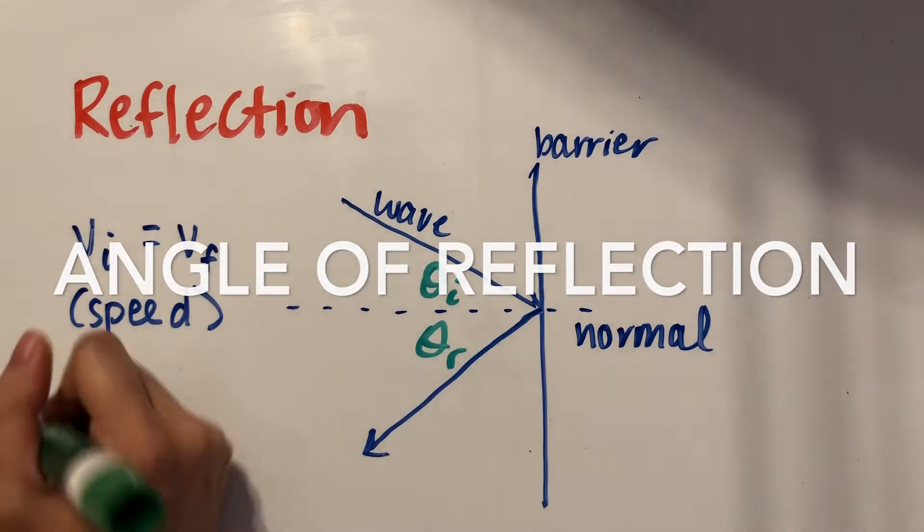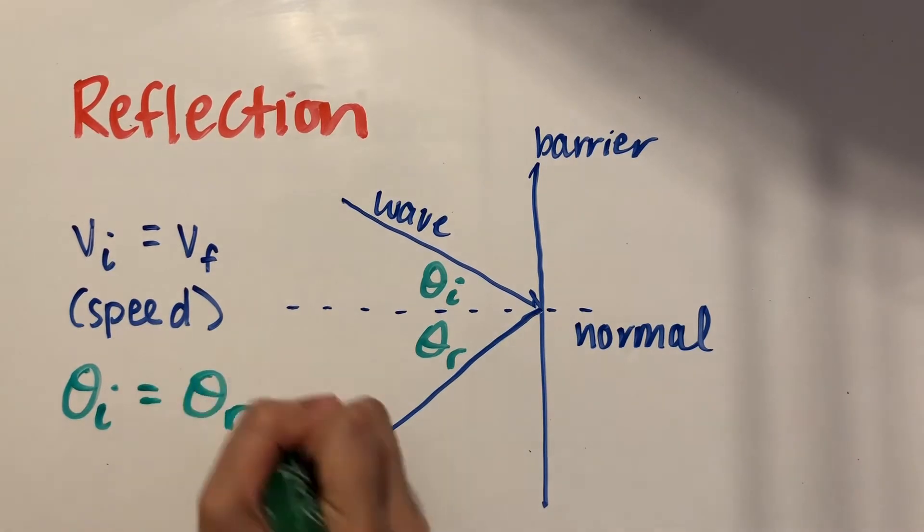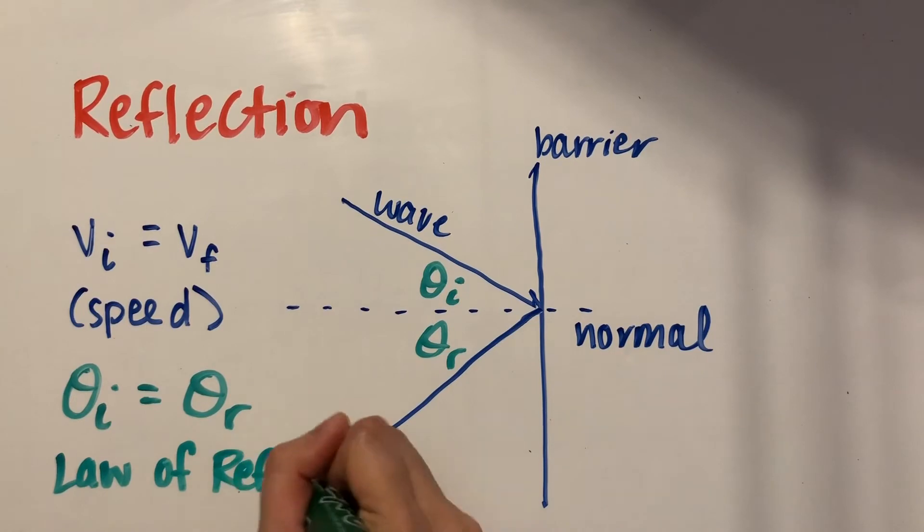By default, these angles are equal to each other in magnitude. Scientists made this law pretty easy to remember. It's called the law of reflection.